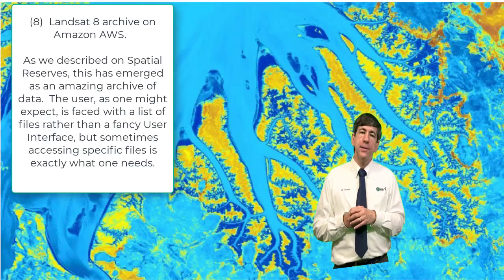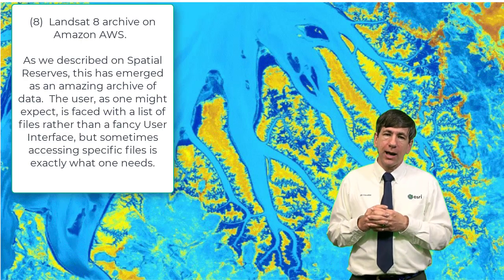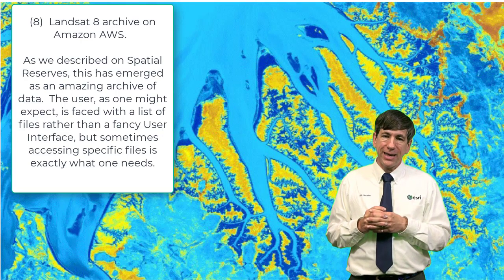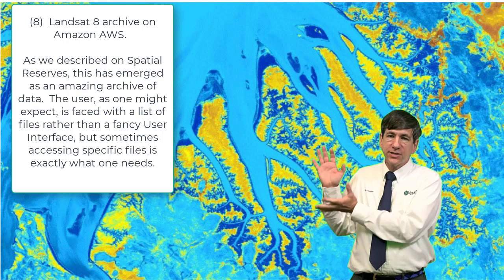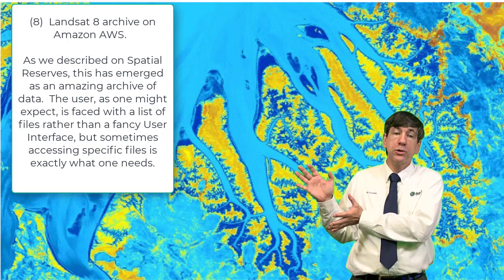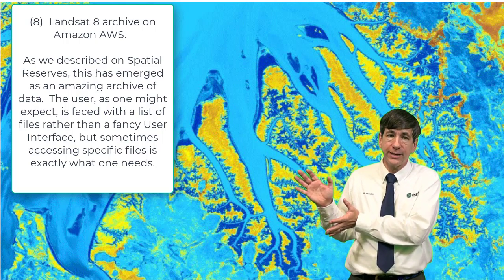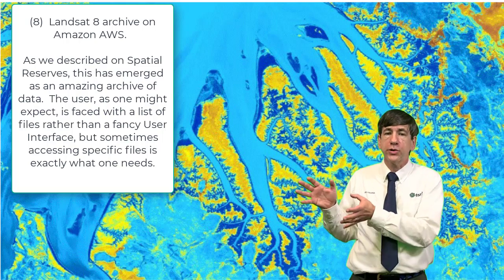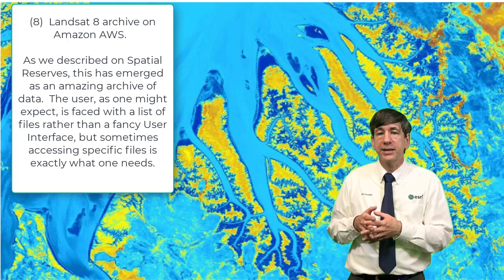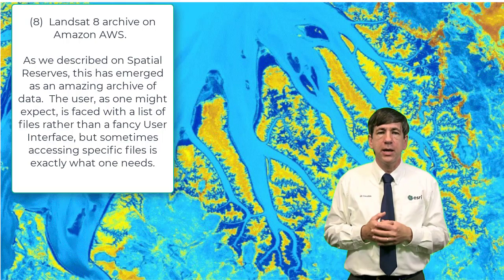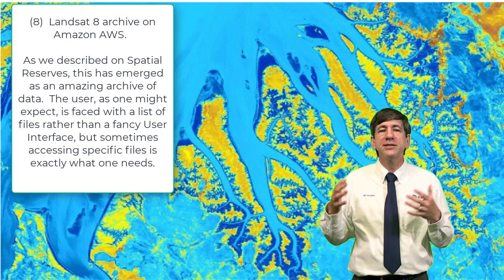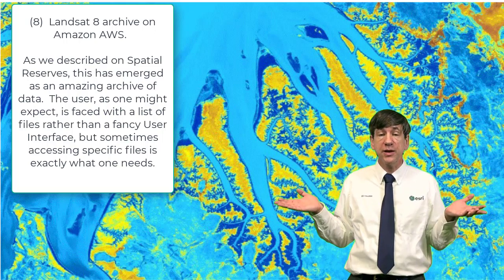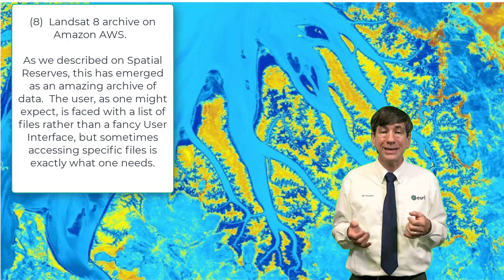Number eight: the Landsat 8 Archive on Amazon Web Services (AWS). This has emerged as an amazing archive of data, which is what you'd expect from Amazon. The user is faced with a list of files rather than a fancy user interface, but sometimes accessing specific files is exactly what one needs.